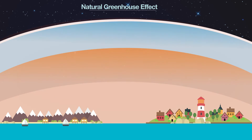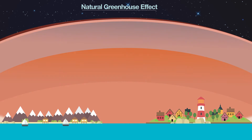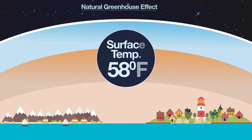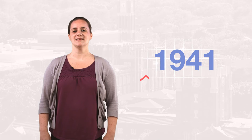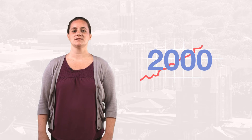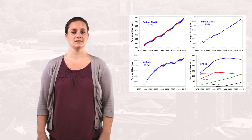By including an atmosphere with the energy budget of the Earth, the surface temperature of the Earth is about 58 degrees Fahrenheit, and humans, animals and plants are able to live. However, since the early 1900s, concentrations of greenhouse gases such as carbon dioxide and methane have risen.